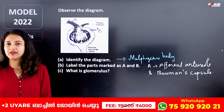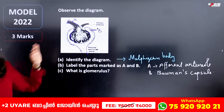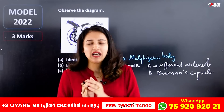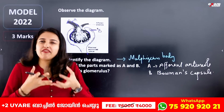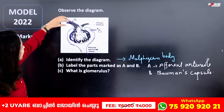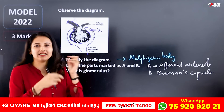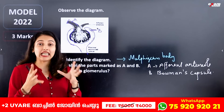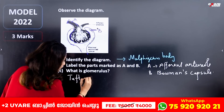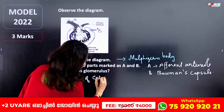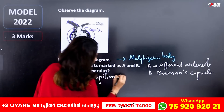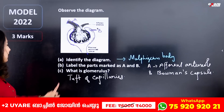What is the Glomerulus? The Glomerulus is enclosed within the Bowman's Capsule. The Glomerulus is a tuft of capillaries. Blood enters through the Afferent Arteriole and exits through the Efferent Arteriole. That is why we call it the Glomerulus — a tuft of capillaries.